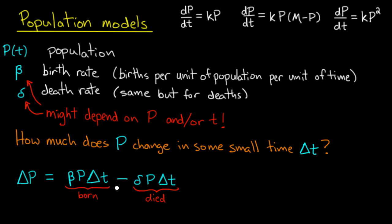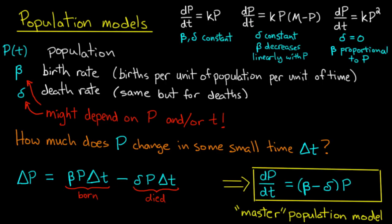Now as we usually do when we want to turn a sort of small change argument into a derivative, we divide both sides by Δt and take the limit as Δt goes to 0. And the result is a differential equation, which is what I call the master population model, the model from which the other population models are derived. And that's dP/dt equals (β - δ)P.